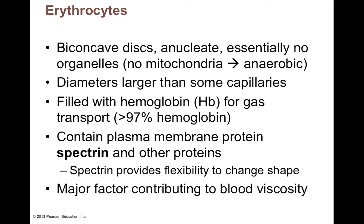Erythrocytes are biconcave discs — almost like a donut without the hole, with two divots on either side. They're anucleate with no organelles or mitochondria, so they undergo anaerobic respiration via glycolysis to produce ATP for their sodium-potassium pumps. Their diameter is usually slightly larger than even your smallest capillaries, which means red blood cells have to be bendable and flexible to squeeze through those really small vessels. They're full of hemoglobin — 97% of the weight inside a red blood cell is due to hemoglobin.